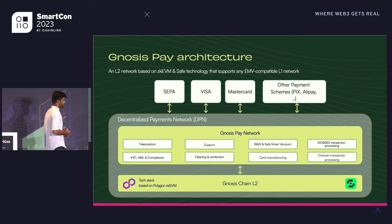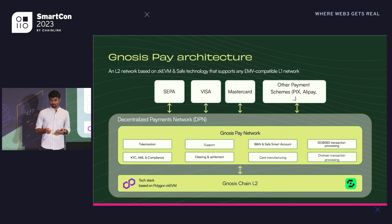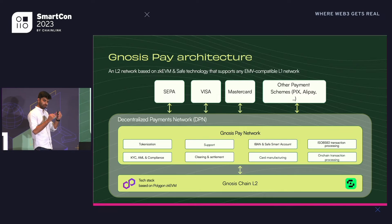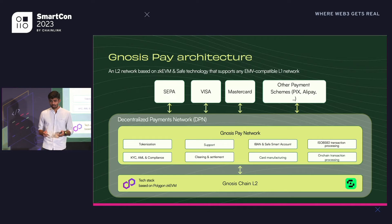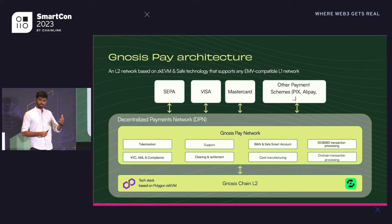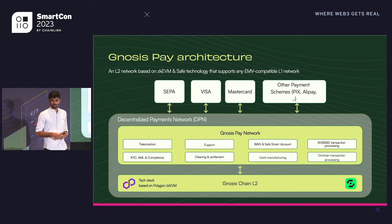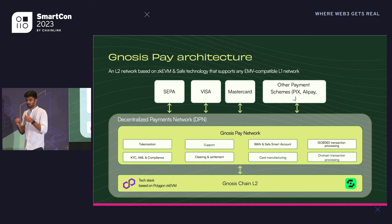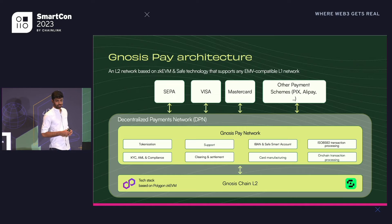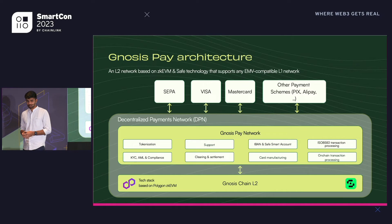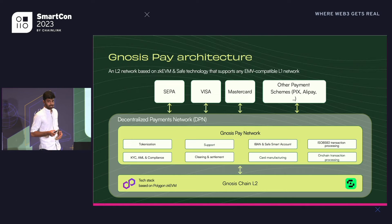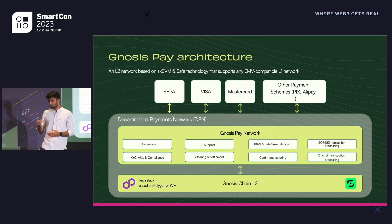Looking into our architecture, we are building a payments-optimized blockchain in partnership with Polygon ZKEVM. On top of this, we are building the Decentralized Payment Network — our core product — a complete suite of payment solutions, right from card issuing and card manufacturing to payment processing on the blockchain side, to processing payments according to ISO standards on the TradFi side, plus KYC, AML, ongoing compliance, settlement and clearing, and more. This network will be connected to payment schemes like Visa or MasterCard, or through a separate network.